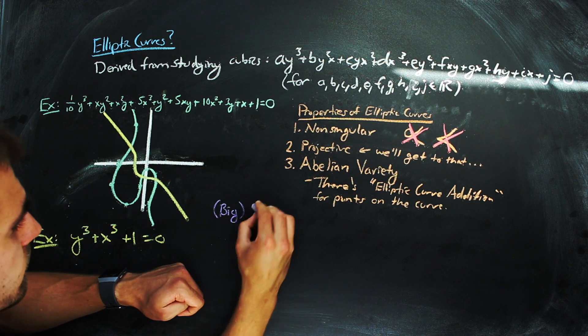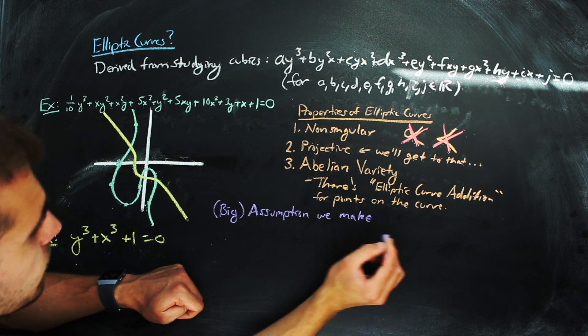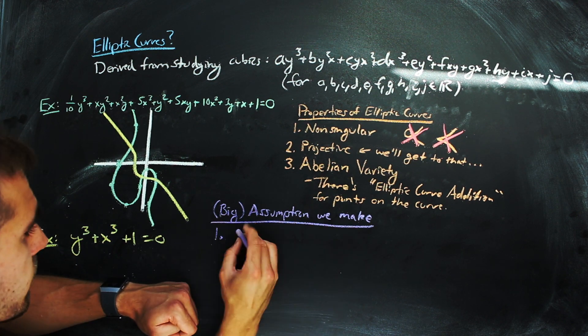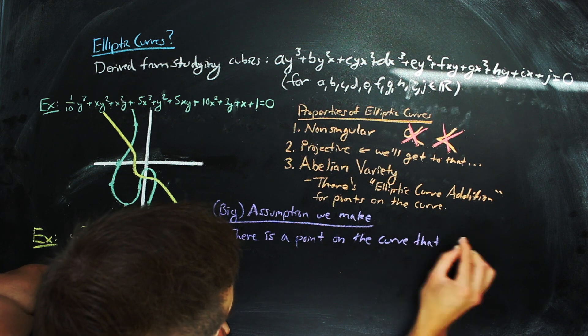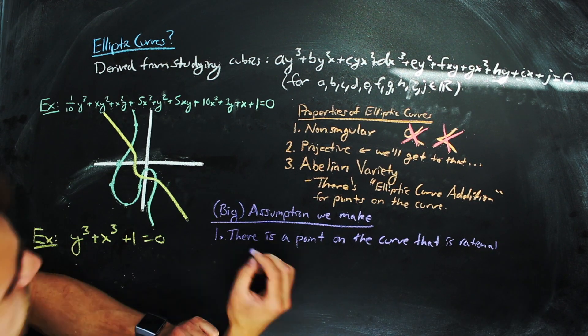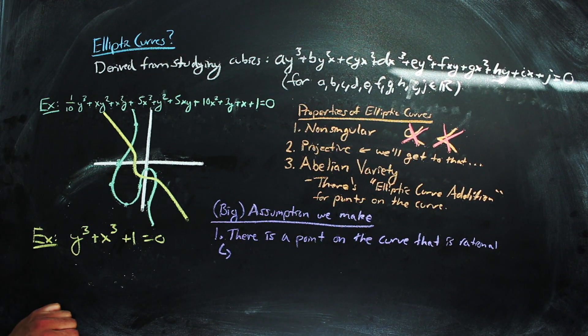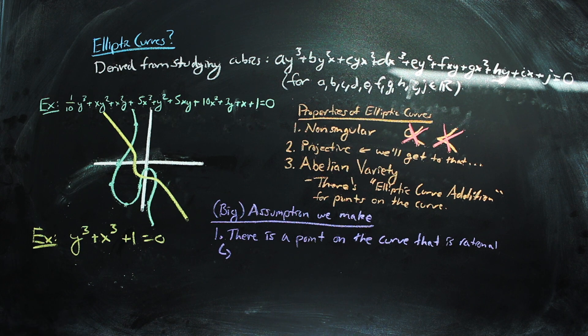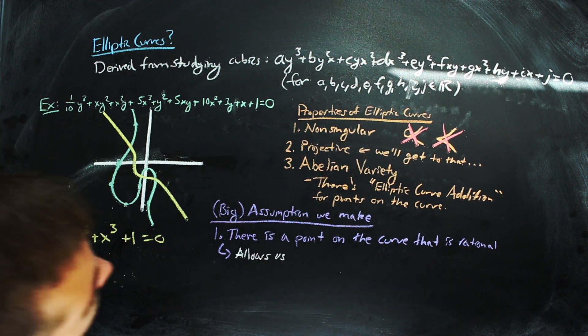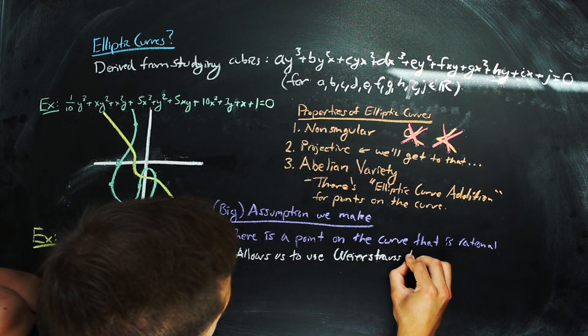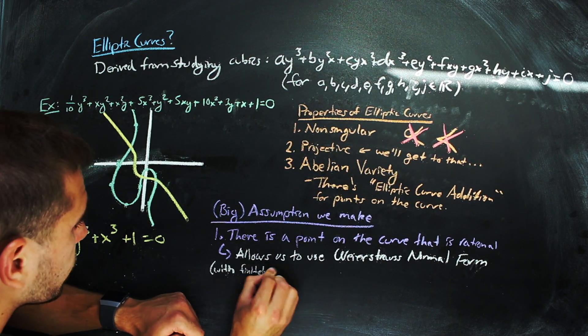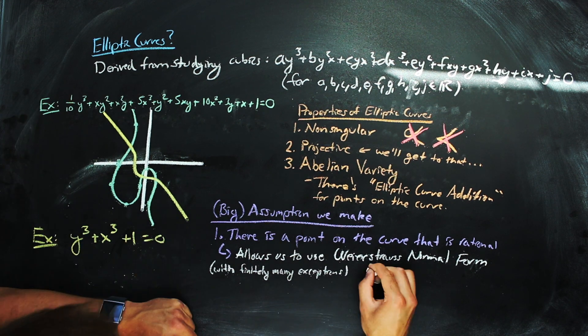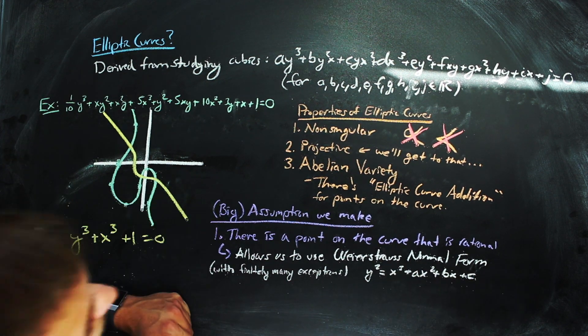Before we jump into the operation, we're going to simplify what we're working with by assuming that there is a rational point on the curve. This is a huge assumption, but it's going to be important for most of the things that we do. One such simplification that arises from this assumption is the Weierstrass normal form, which allows us to write elliptic curves in the form y squared equals x cubed plus ax squared plus bx plus c for some constants a, b, and c.